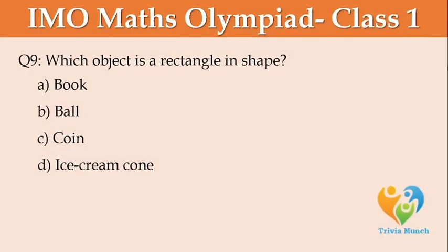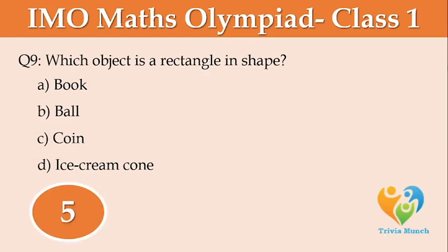Which object is a rectangle in shape? A: book, B: ball, C: coin, D: ice cream cone.